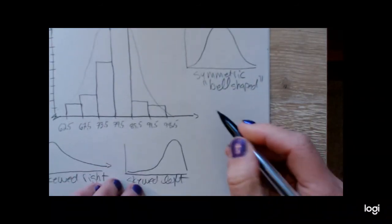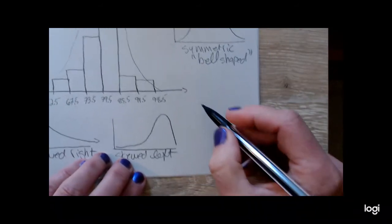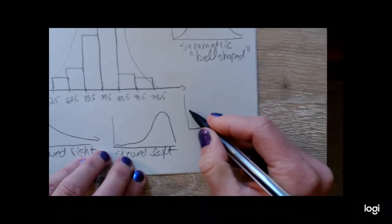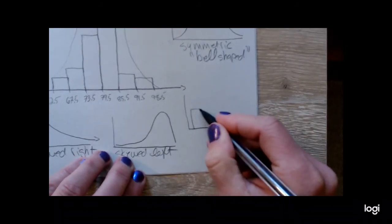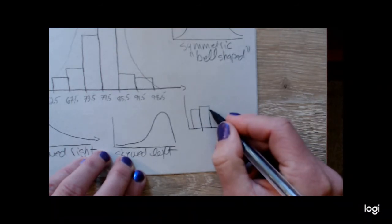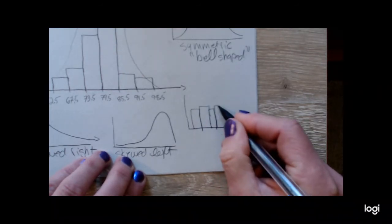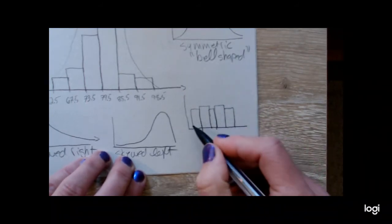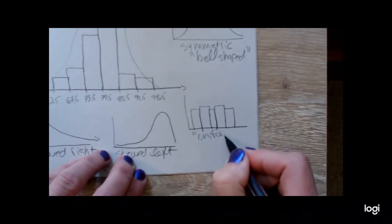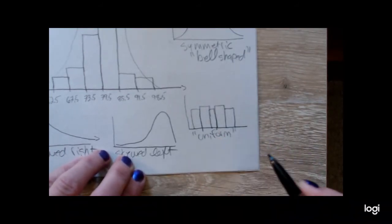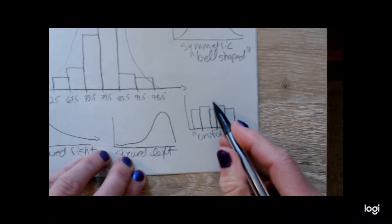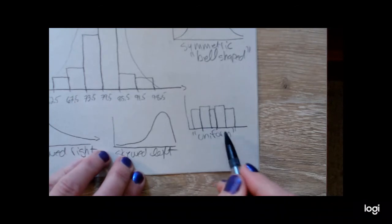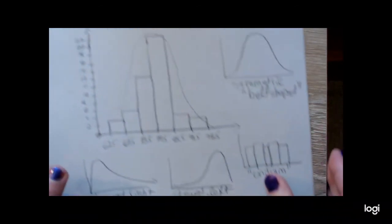We could also have all of the values tending to be equally likely, and if that were the case, if I had a histogram, for example, that looked like this where all of the bars are about the same width, we would call this uniform. Okay, a uniform shape is also symmetric, because if we were to divide it down or cut it in half down the middle and fold it in half, the left side would look like the right side. All right.